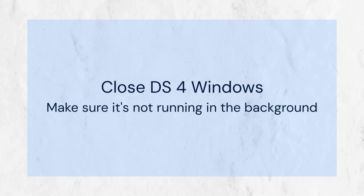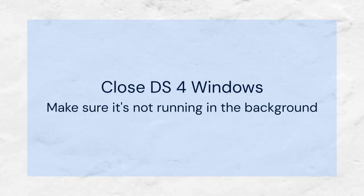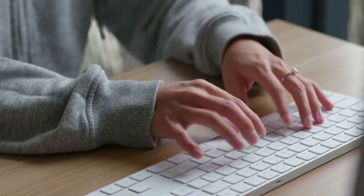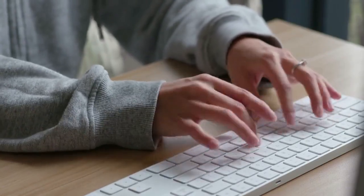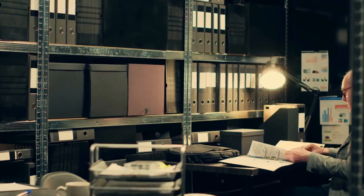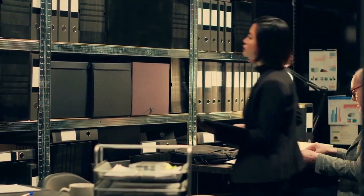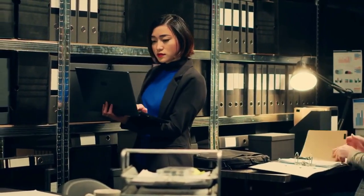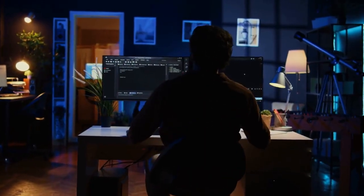First, close DS4 Windows. Make sure it's not running in the background. Check your system tray, usually located in the bottom right corner of your screen. If you see the DS4 Windows icon, right-click it, then select Exit or Close. This will completely shut down the program.